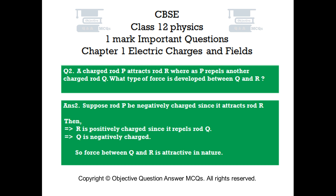Answer number 2. Suppose rod P is negatively charged since it attracts rod R. Then R is positively charged. Since P repels rod Q, Q is negatively charged. So the force between Q and R is attractive in nature.